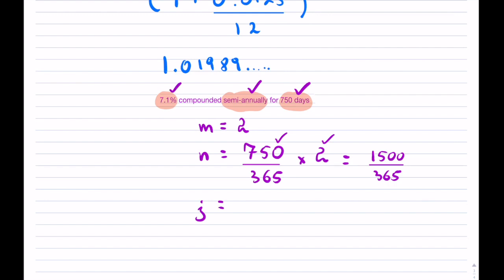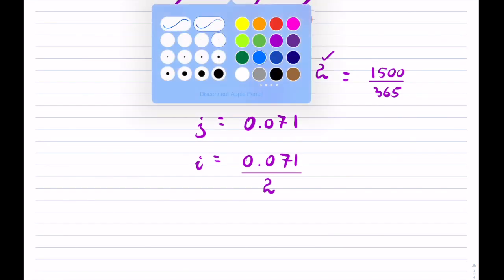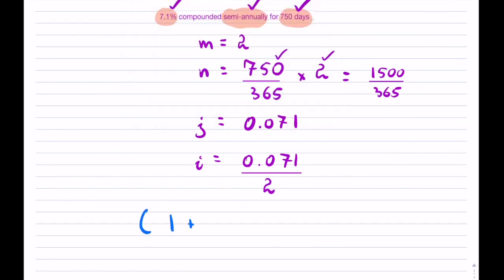So J. So that's right here. 0.071. That's your nominal rate. And then your i is equal to 0.071 divided by, and don't forget your M, which is 2. So now inputting this in. So I have 1 plus 0.071 over 2. That's your i. For how long? That's this odd exponent right there. Let's punch it in.